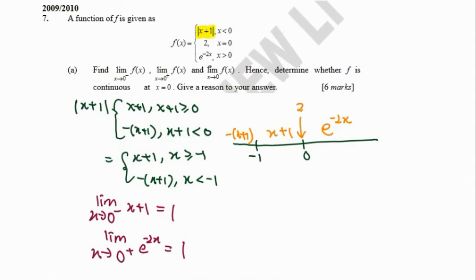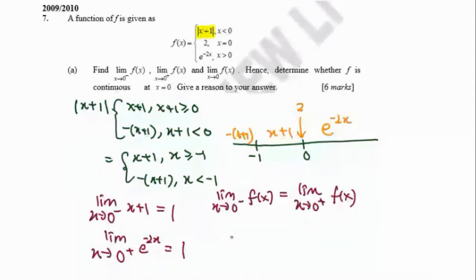Therefore, we can conclude that the limit as x approaches 0 of the function exists. Since the left-hand limit equals the right-hand limit, the limit of the function as x approaches 0 equals 1.